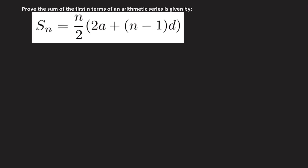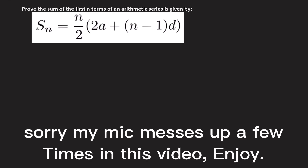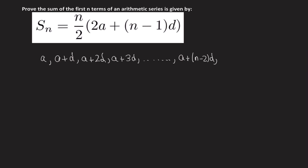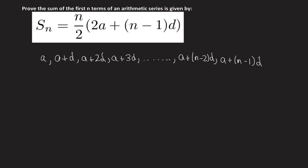Here is how you'd prove the sum of the first n terms of an arithmetic series. An arithmetic series is when you have a starting number 'a', and then for every term you add on a common difference which we call 'd'. So the first three terms are: a, a plus d, a plus 2d. The fourth term is a plus 3d. The (n minus 1)th term is a plus (n minus 2)d, and the nth term is a plus (n minus 1)d.